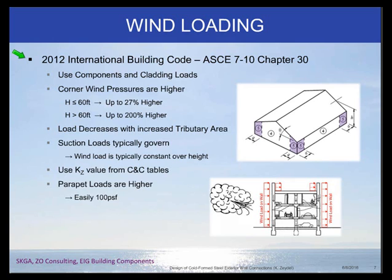Corner wind pressures are something important to note: they can be higher. In smaller, shorter buildings under 60 feet, it's about a 30% increase — not necessarily a big deal. But in taller structures, those corner wind pressures can be 200% higher.